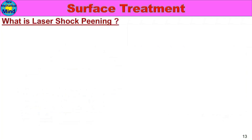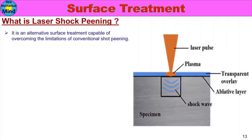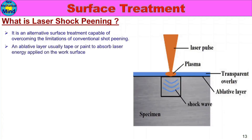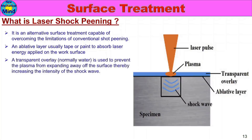What is laser shot peening? It is an alternative surface treatment capable of overcoming the limitations of conventional shot peening. Shot peening or water jet peening will be applied to a flat surface, but when the surface is complicated, we use laser shot peening. An ablative layer — usually tape or paint — is applied on the work surface to absorb laser energy. A transparent overlay, normally water, is used to prevent the plasma from expanding away from the surface, thereby increasing the intensity of the shock wave.